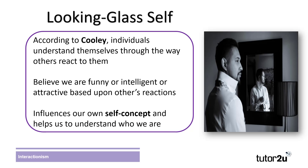Labelling theory links quite closely to another idea put forward by interactionists, that of the looking glass self. Charles Cooley argued that individuals understand themselves through the way that other people react to them. He used the analogy of looking into a mirror and people seeing themselves the way they thought others saw them. For example, people believe they are attractive because others tell them so. They believe they are funny if others laugh. If people ignore others or react negatively, this has negative impacts on that person's self-concept, as they are likely to perceive themselves negatively based upon social reactions.